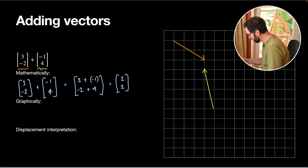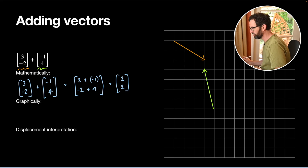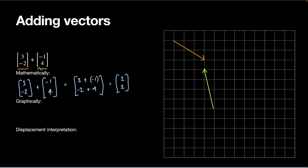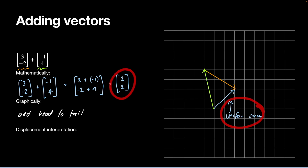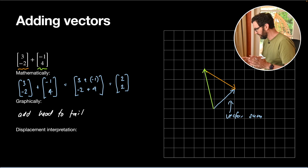When we add these together, we move the vectors to form a chain head to tail. Graphically, we add head to tail — I start with the green one, then move the orange one so its tail starts at the head of the previous one. The sum is the vector from the start of the first to the end of the last: 2 across and 2 up, which matches our calculation.